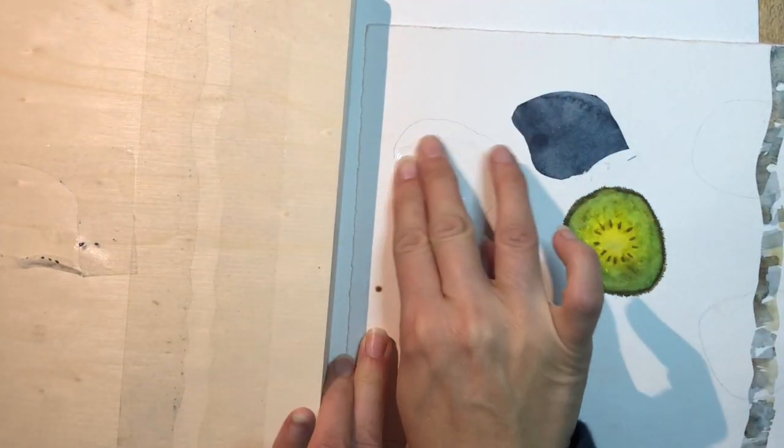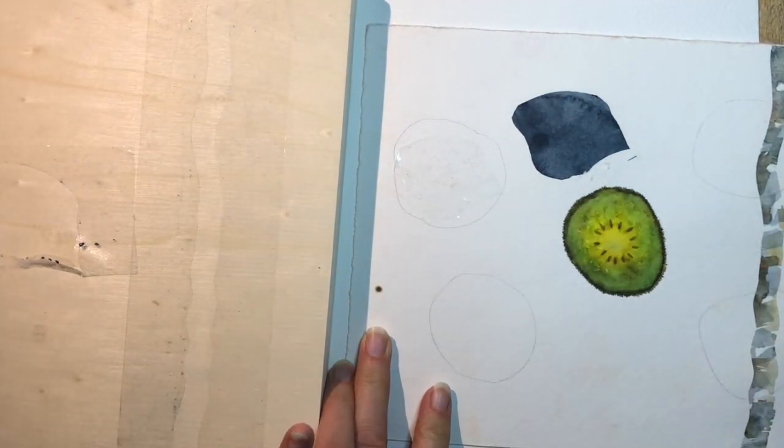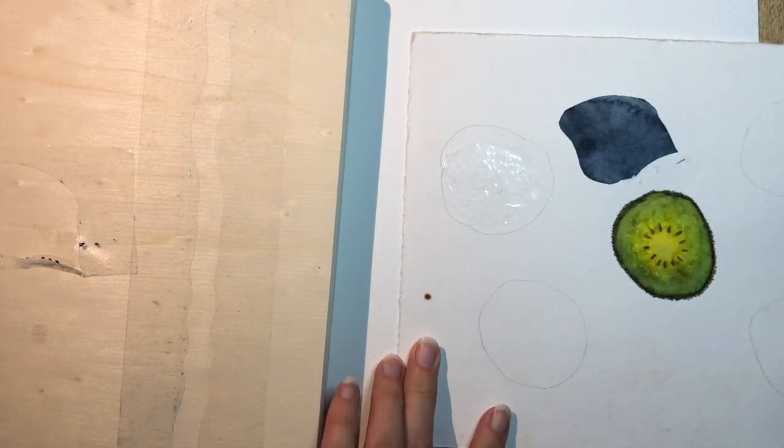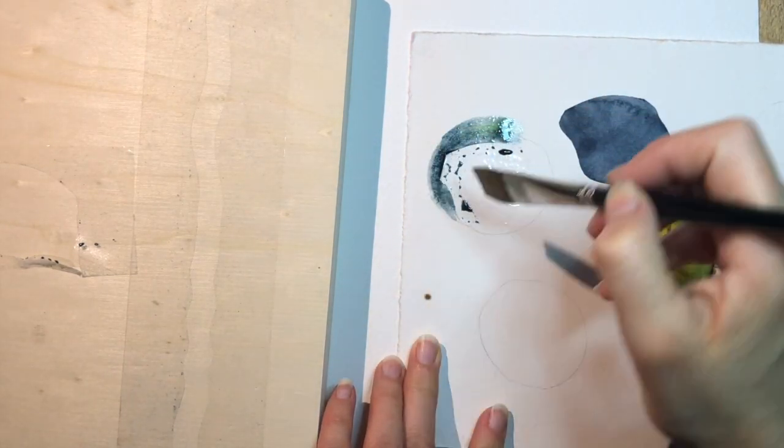So here we have the positive, the centerpiece, and in this case we could paint around it this way.